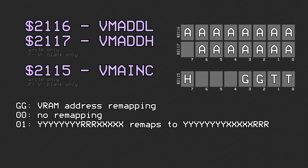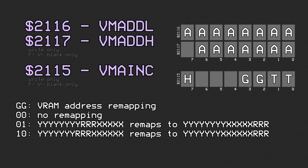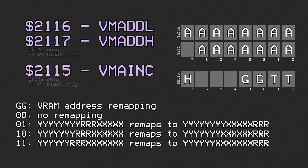Incrementing by option 01 allows writing rows of 256 pixels or 32 tiles of 2 BPP data, 128 pixels or 16 tiles of 4 BPP data, or 64 pixels or 8 tiles of 8 BPP data at a time. Option 10 doubles those values, and option 11 quadruples them.